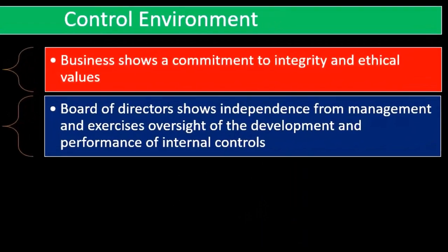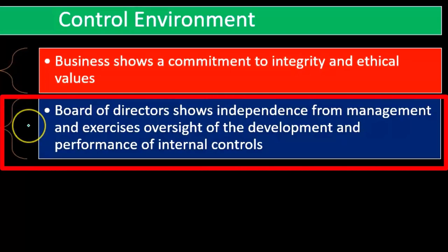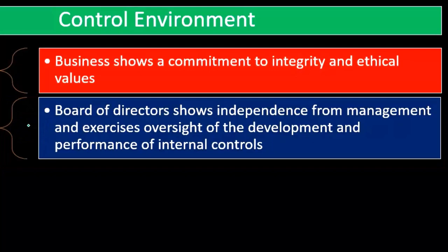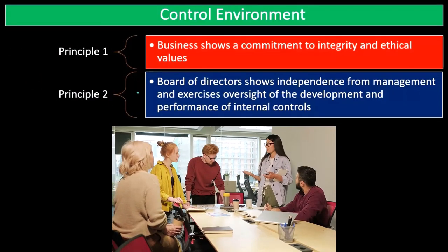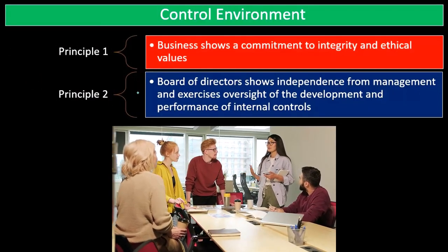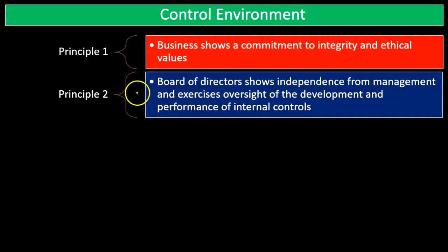Principle number two: the board of directors shows independence from management and exercises oversight of the development and performance of internal control. The board of directors is represented and voted on by the owners — the shareholders — so they should be able to provide oversight over management, who are essentially the people hired to act as agents of the shareholders.